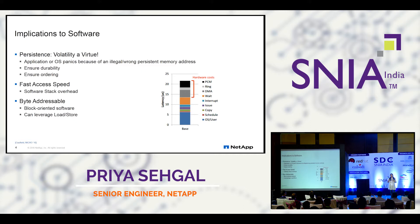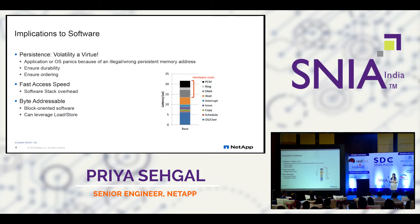Moreover, persistence traditionally has been thought of as accessing devices in blocks — usually 4096 bytes — and not as bytes. So the whole software is block-oriented, whereas we have this media which is byte-addressable and persistent. We need to rethink about the way we access and make the best use of this media if we really want to get access latencies close to what this media provides.